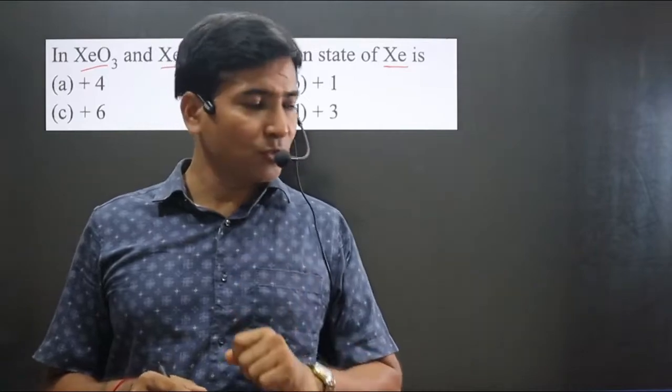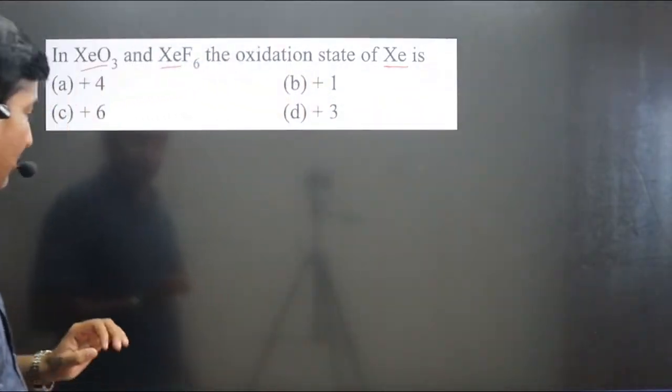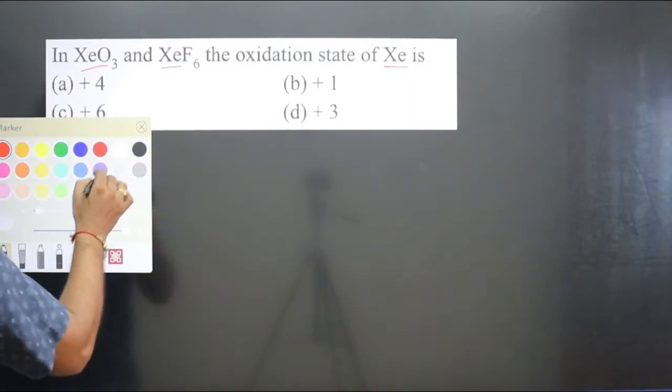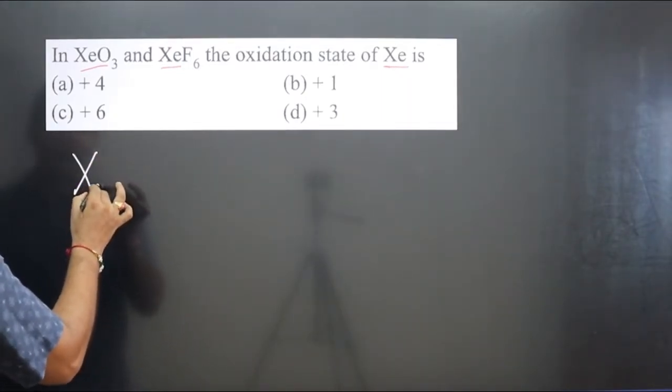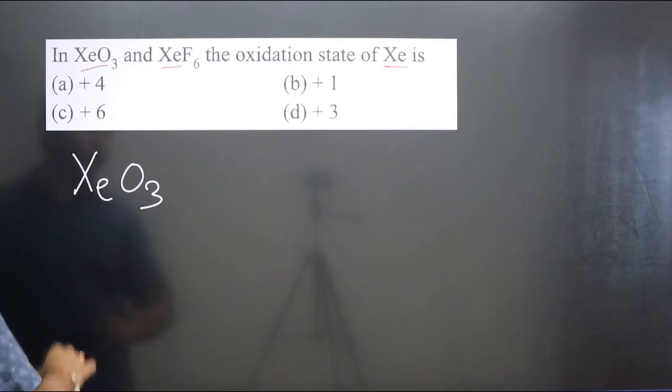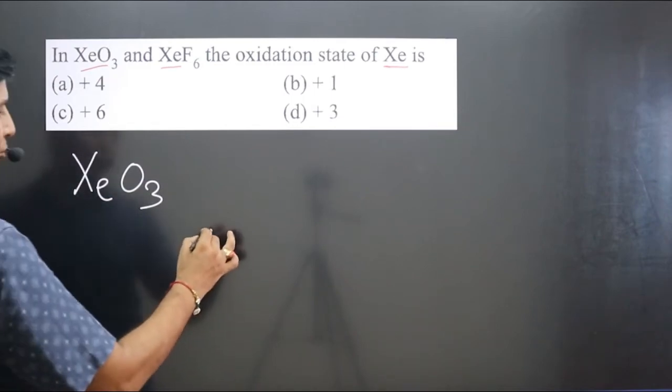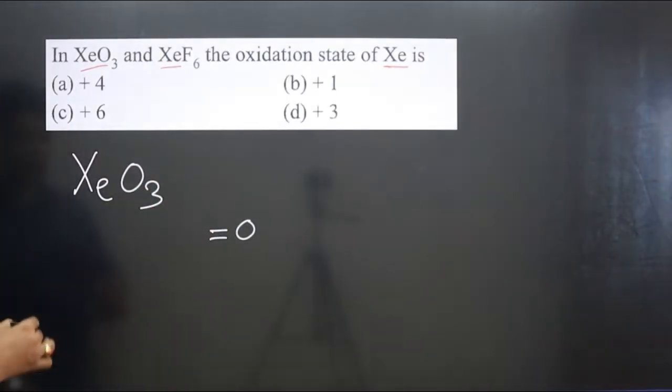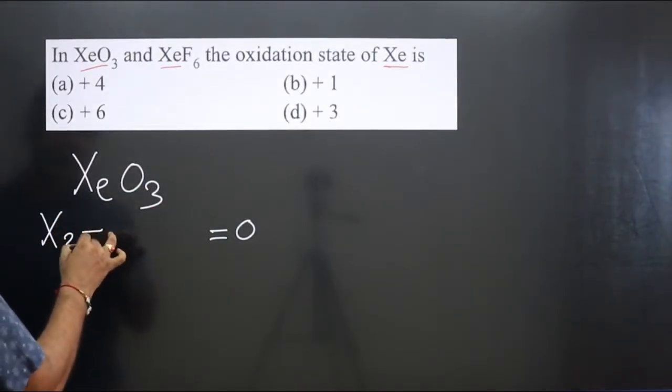Let's calculate the oxidation number. We have xenon oxide, XeO₃. It is a neutral compound. The total oxidation number of all the atoms in a given compound is always equal to zero. Xenon is there, and how many oxygen? Three oxygen, each oxygen is minus two.